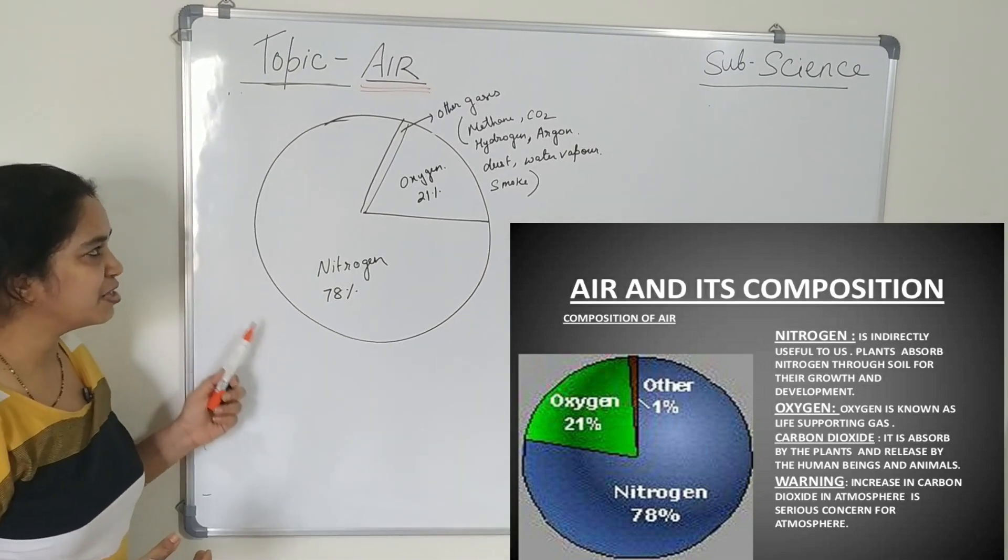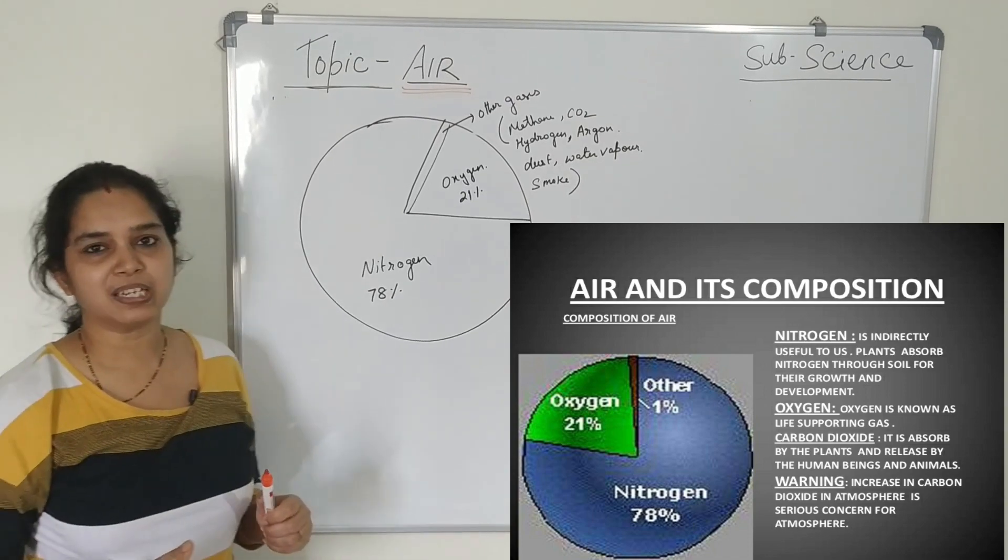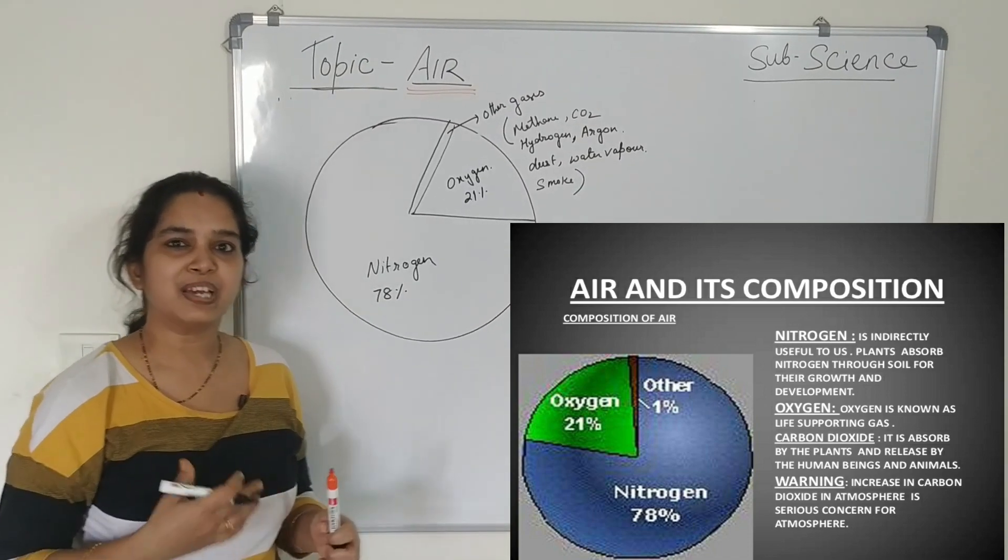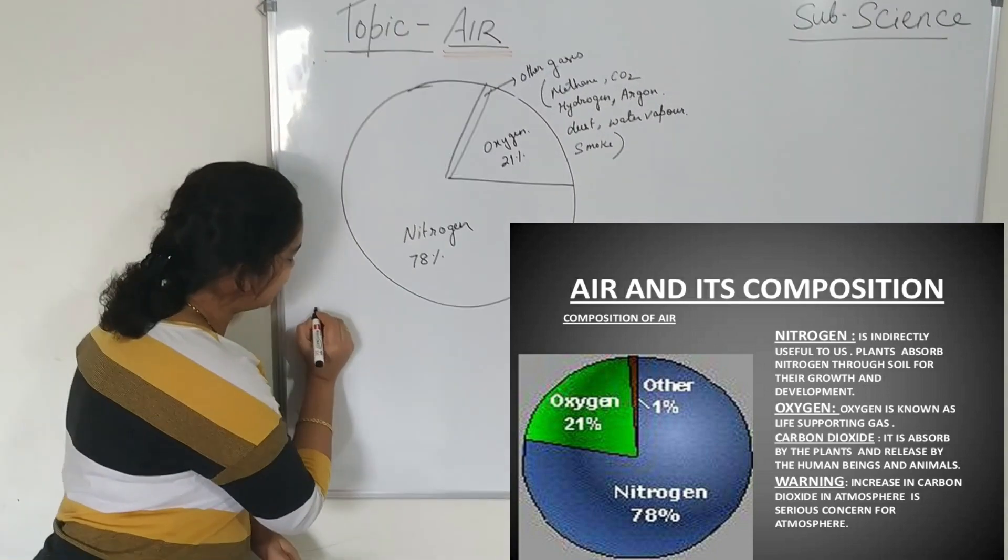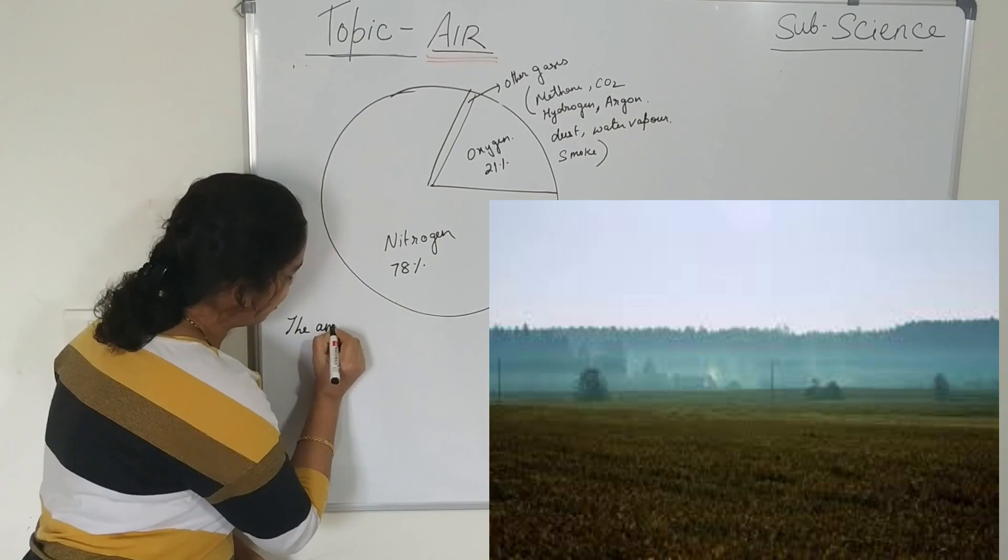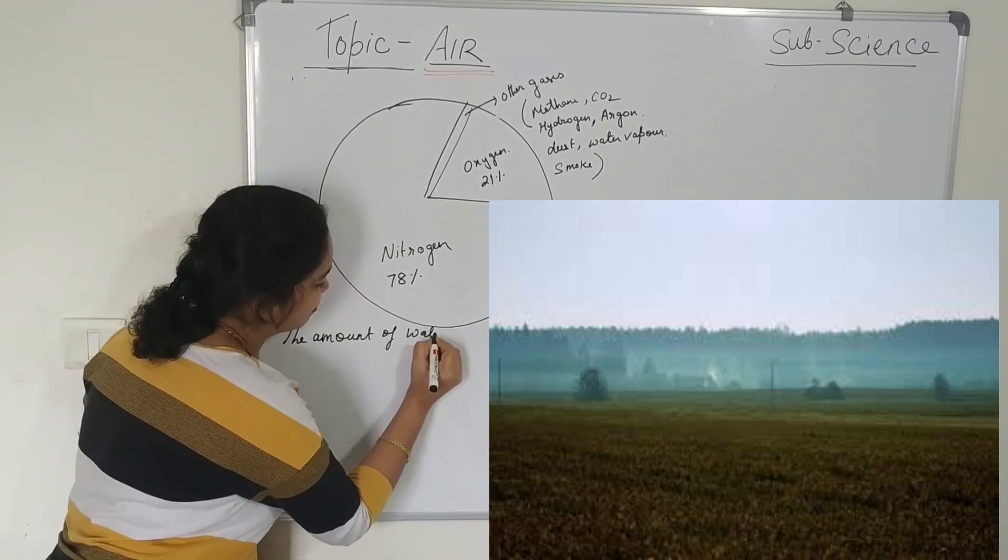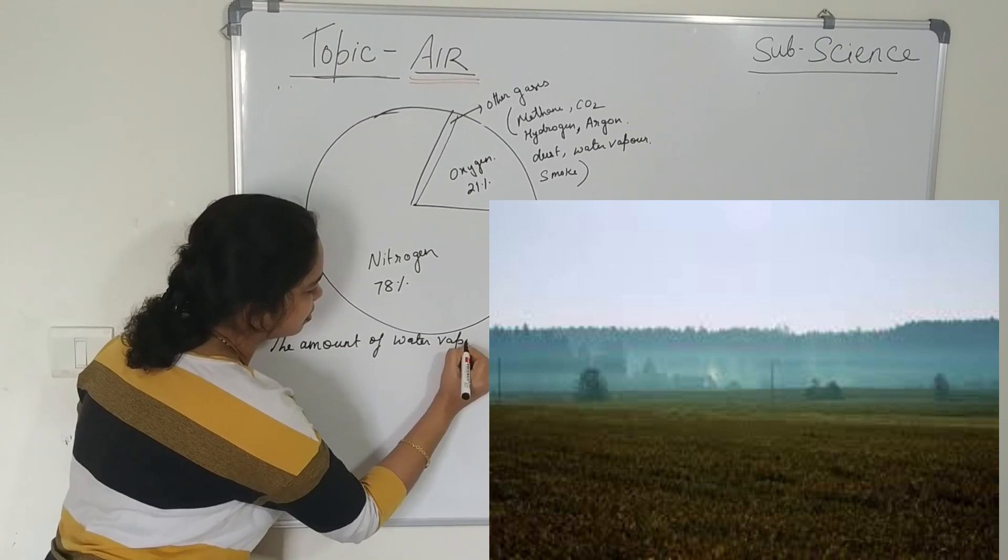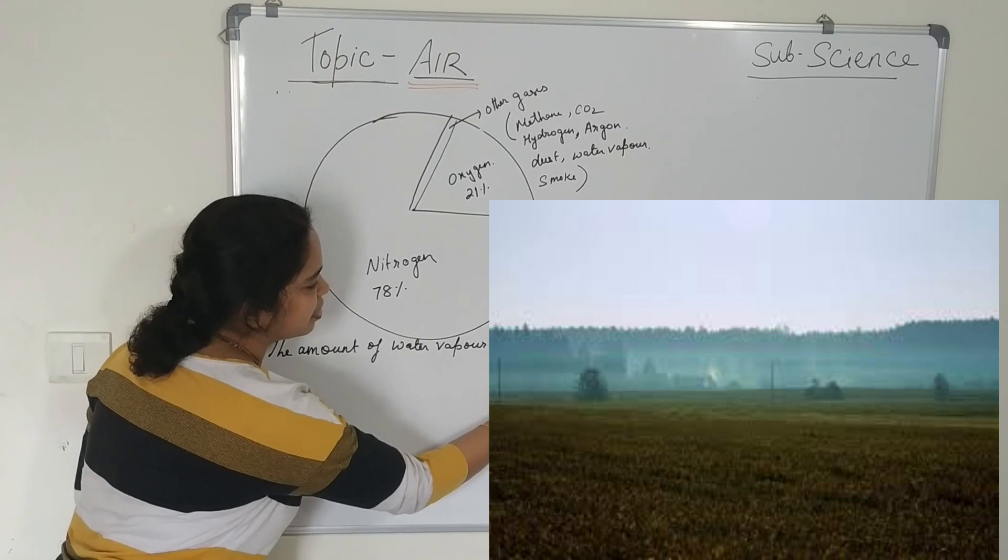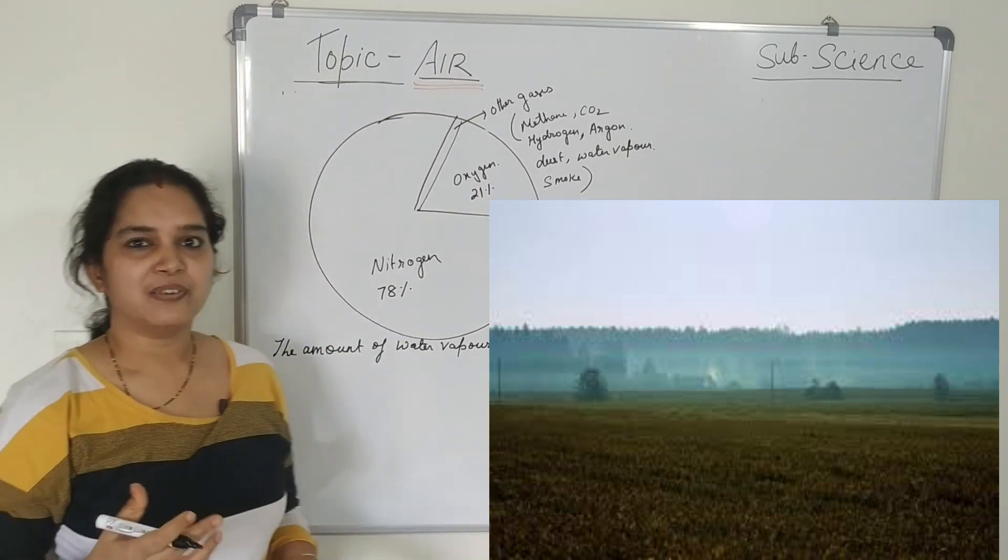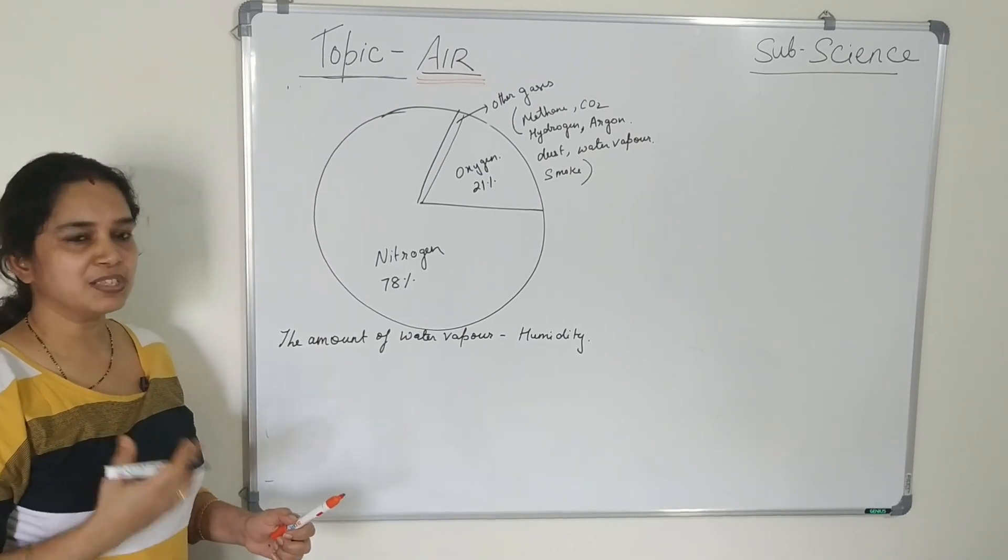It is a mixture of nitrogen, oxygen and other gases. The percentage of the dust particles and the water vapour varies from place to place. The amount of water vapour present in the air is called the humidity. The amount of water vapour present in the air is called the humidity. You might have felt very sticky during the rainy season. This is due to the presence of humid air.